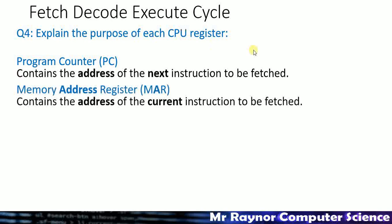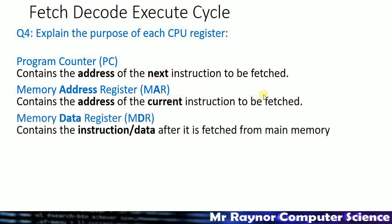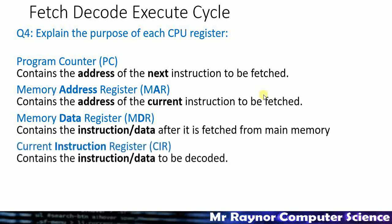The memory address register contains the address of the current instruction being fetched — the one we are working on at the moment — whereas the program counter holds the next instruction after that. Then we have the memory data register, which contains the instruction or data after it is fetched from main memory. It's a temporary place to store it once fetched and just before decoding. We copy the value from the MDR into the current instruction register, which holds the instruction currently being decoded.